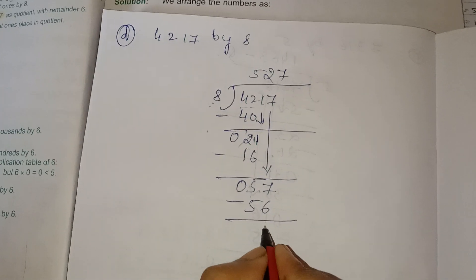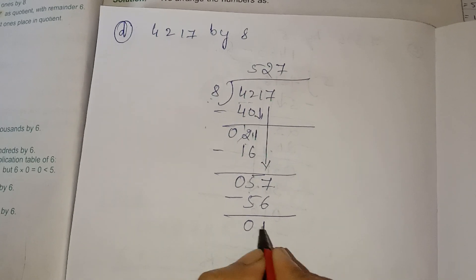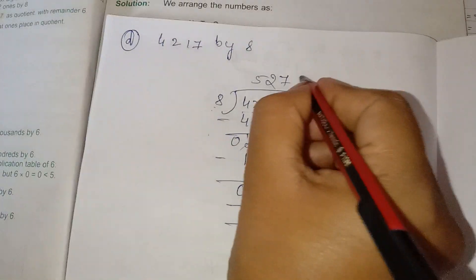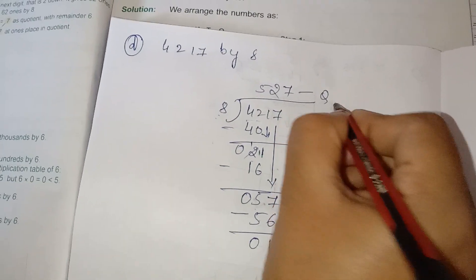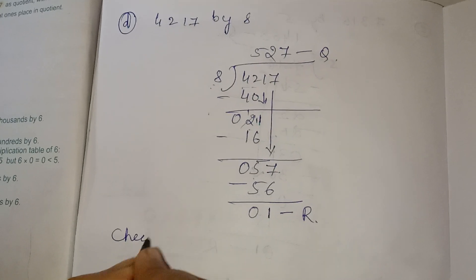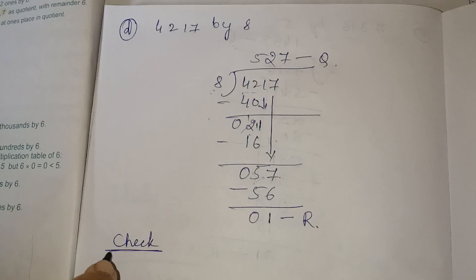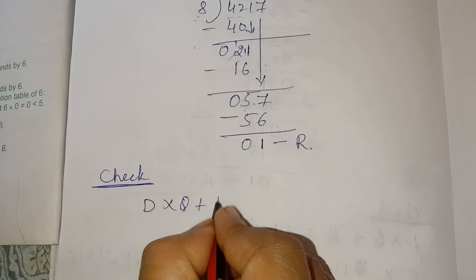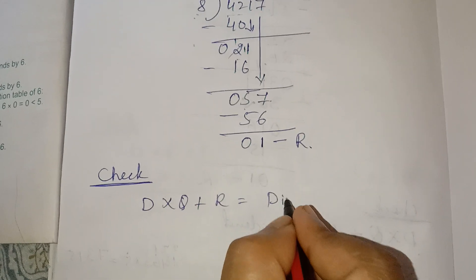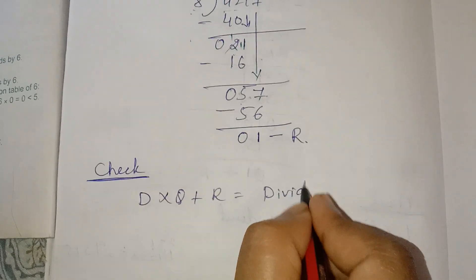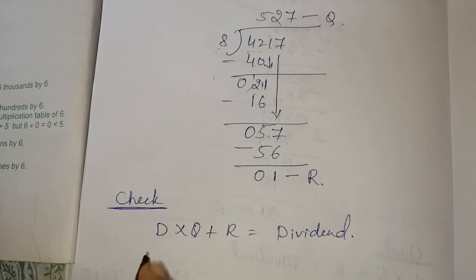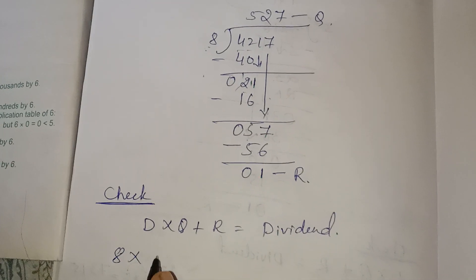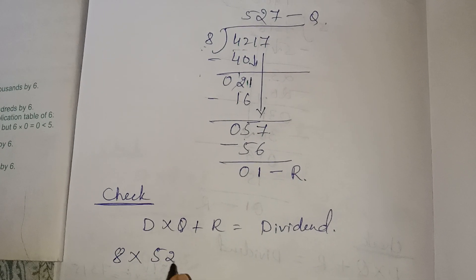Recall table of 8: 8 eights are 64, 8 sevens are 56. So 8 sevens are 56. Subtract — we get a remainder of 1. This is the remainder and this is the quotient. Check your answer by the relation: divisor into quotient plus remainder equals dividend. Divisor is 8, quotient is 527.